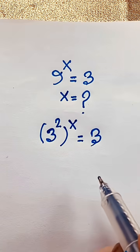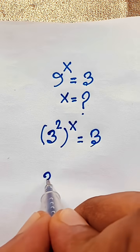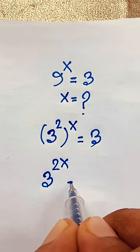Then, according to the exponential formula, this will be 3 to the power 2 times x, it will be 2x, and here is 3.